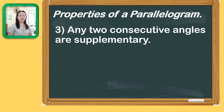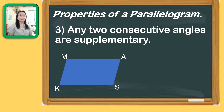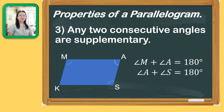Another property of a parallelogram is that any two consecutive angles are supplementary. In parallelogram MASK, the consecutive angles are angle M and angle A, such that angle M plus angle A is equal to 180 degrees. Same with angle A and angle S — they are consecutive angles, so their sum is also 180 degrees. The same with angle S and angle K; their sum is also 180 degrees.